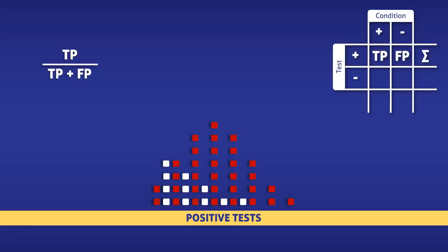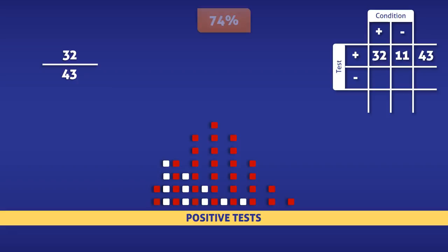Counting the squares, we find that there are 32 true positives, 11 false positives, and 43 positive tests in total. Now all that's left to do is enter the data into the equation. In doing so, we find that the positive predictive value is 32 over 43, which is 74%.